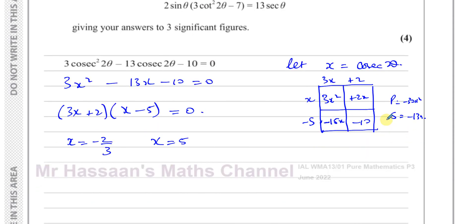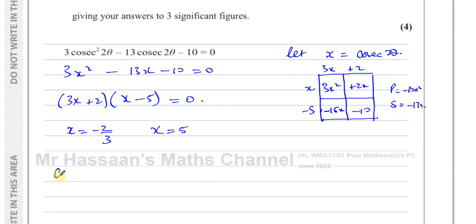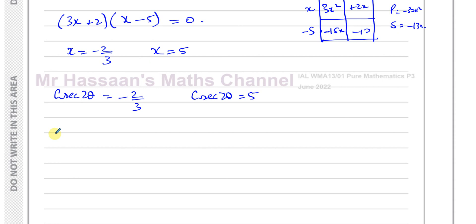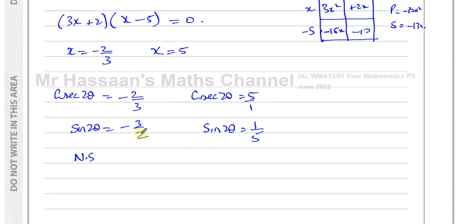Since x = cosec2θ, we have cosec2θ = −2/3 or cosec2θ = 5. Taking reciprocals: sin2θ = −3/2 or sin2θ = 1/5. Since sinθ is always between −1 and 1, sin2θ = −3/2 has no solution. Only sin2θ = 1/5 yields valid solutions.